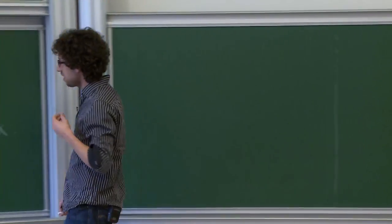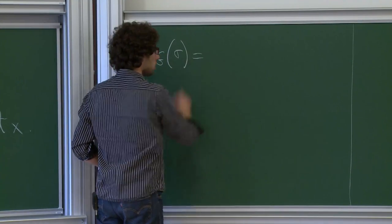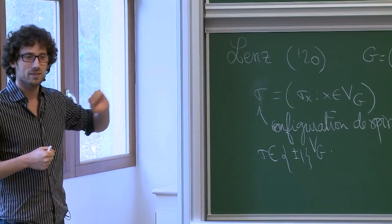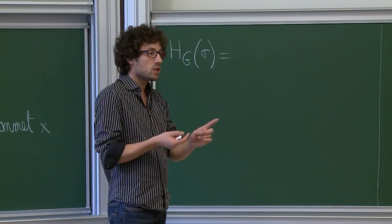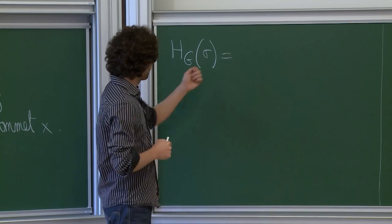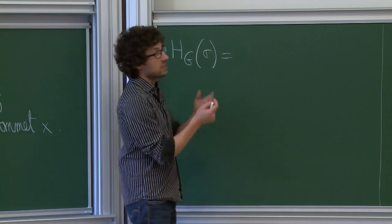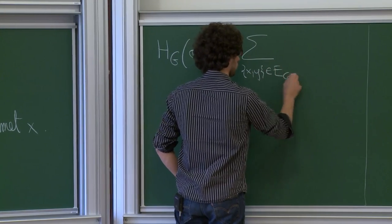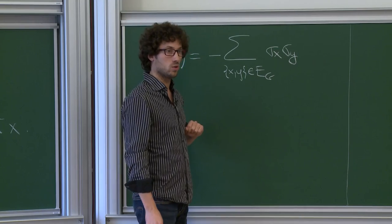L'énergie d'une configuration σ suit l'intuition la plus naturelle : deux atomes voisins veulent pointer dans la même direction. On définit l'énergie comme moins la somme sur toutes les arêtes du graphe de σ_x · σ_y. Ce produit vaut +1 si les voisins sont alignés, −1 sinon. L'énergie est donc minimale si tous les atomes pointent dans la même direction.